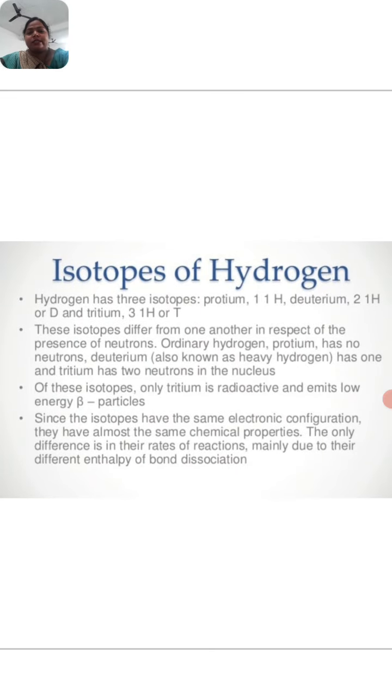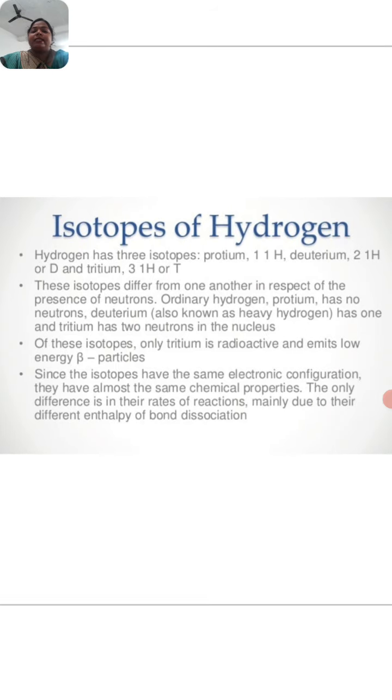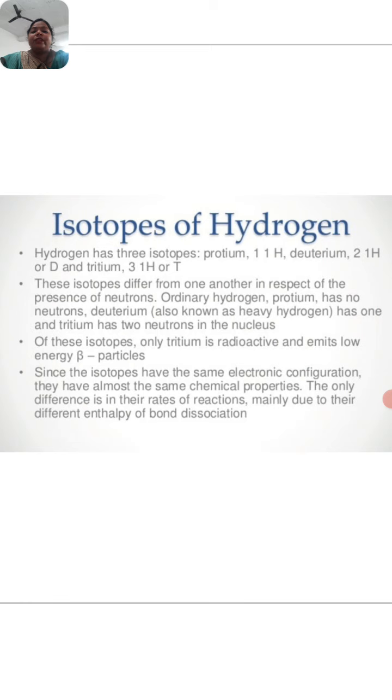Now, isotopes of hydrogen. Hydrogen has three isotopes: protium, deuterium and tritium. These isotopes differ from one another in respect of the presence of neutrons. Ordinary hydrogen, protium, has no neutrons and deuterium, also known as heavy hydrogen, has one and tritium has two neutrons in the nucleus.